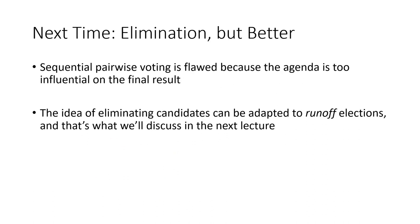Next time, we're going to talk about a different voting method. Sequential pairwise voting is pretty flawed because the agenda is too influential on the final result. Instead, we'll use the idea of eliminating candidates, but not one at a time as in sequential pairwise voting. We'll adapt that method to what we call runoff elections, and that's what we'll be talking about in the next lecture.